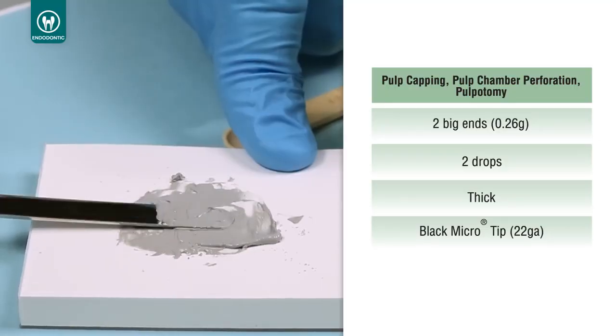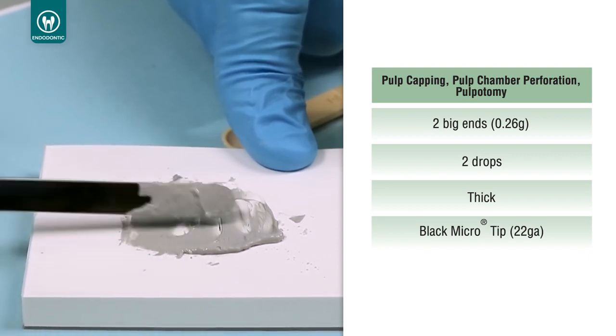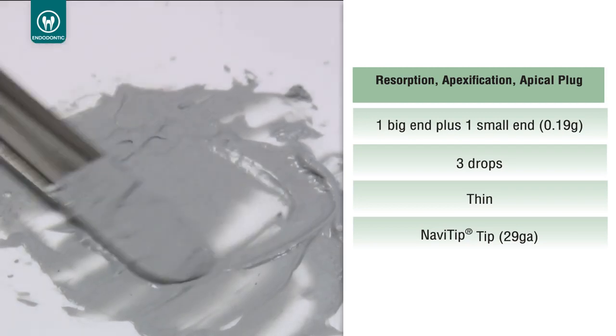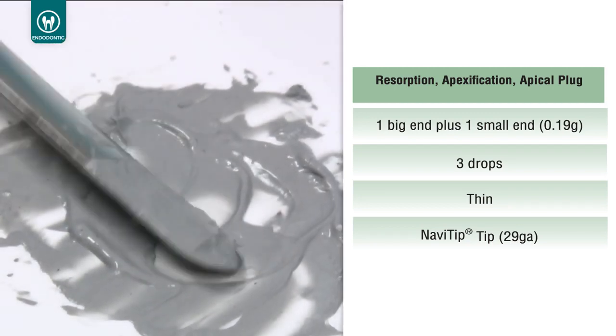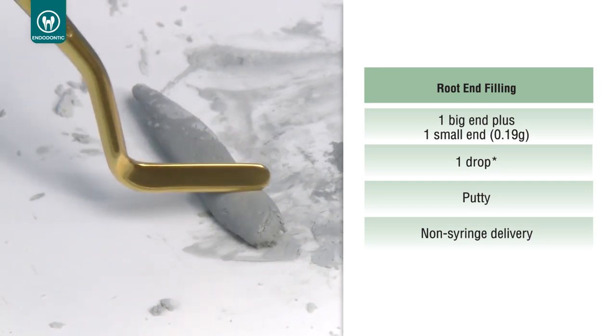For example, use a thick consistency for pulp capping, pulp chamber perforation, and pulpotomy. Use a thin consistency for resorption, apexification, and apical plug. A putty consistency can be used for root end filling.